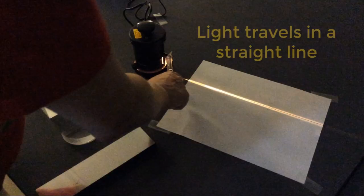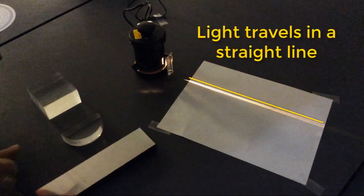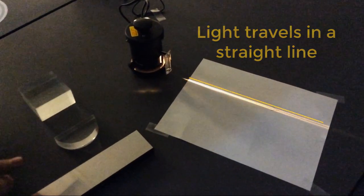Earlier, we saw that light rays propagate along a straight line, as we can see here.